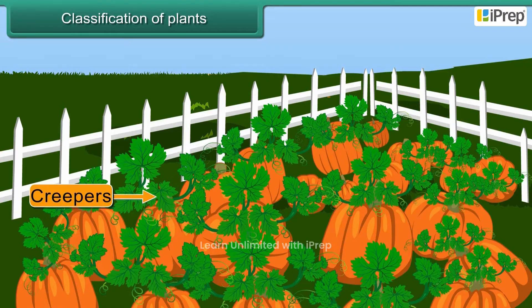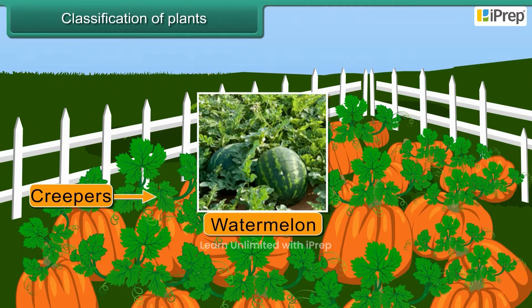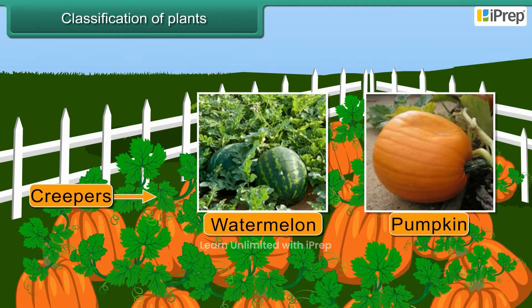Creepers are plants that grow on the ground. They are very weak. Watermelon and pumpkin are some creepers.